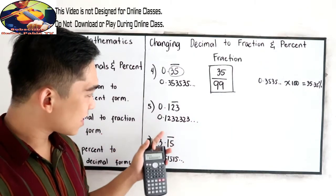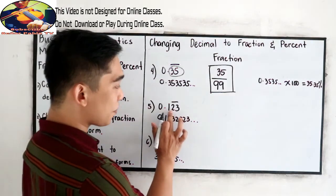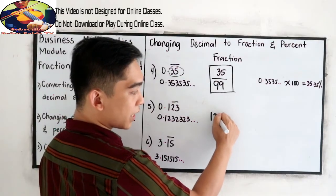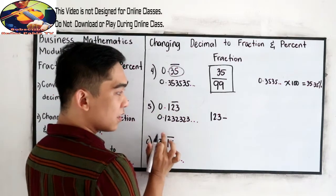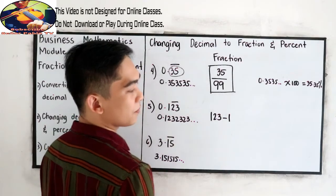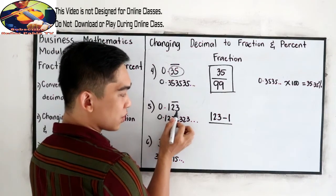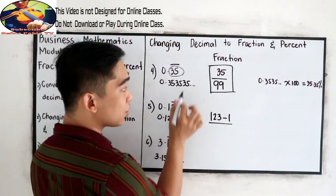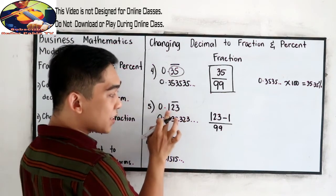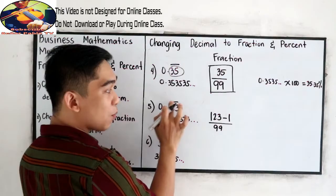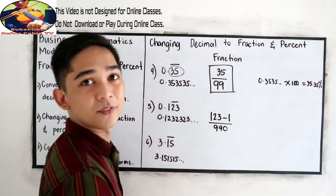Next, second case, 0.123 repeating. So copy our number, 1, 2, 3. Subtract the number that is not included in our fraction bar. In this case, 1. So subtract 1 over 1, 2. So there are two numbers included in our fraction bar. So change it to 9, just like what we did in our number 4. Now, we have three decimal places. One is not included in our fraction bar. So, we're going to write that as 0. So that's our rule.